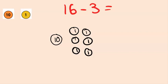And then see that we're taking away 3 ones, so they'd cross out 3 ones, and see that we're left with 1 ten and 3 ones, which is 13.